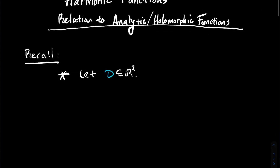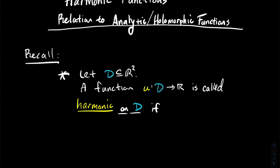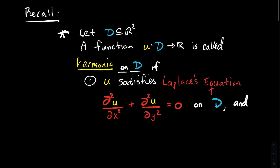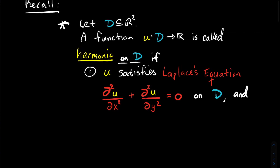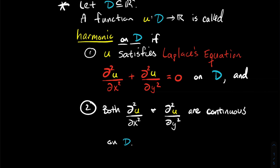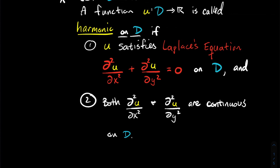So the first thing: let D be some subset of the plane. A function U whose domain is D and spits out a real number — so U is a function of two real variables — we're going to call it harmonic on D if: one, U satisfies Laplace's equation, which says that the second partial of U with respect to x plus the second partial of U with respect to y equals zero for all points (x, y) in D. And the second condition is that both of these second partials are continuous throughout D.